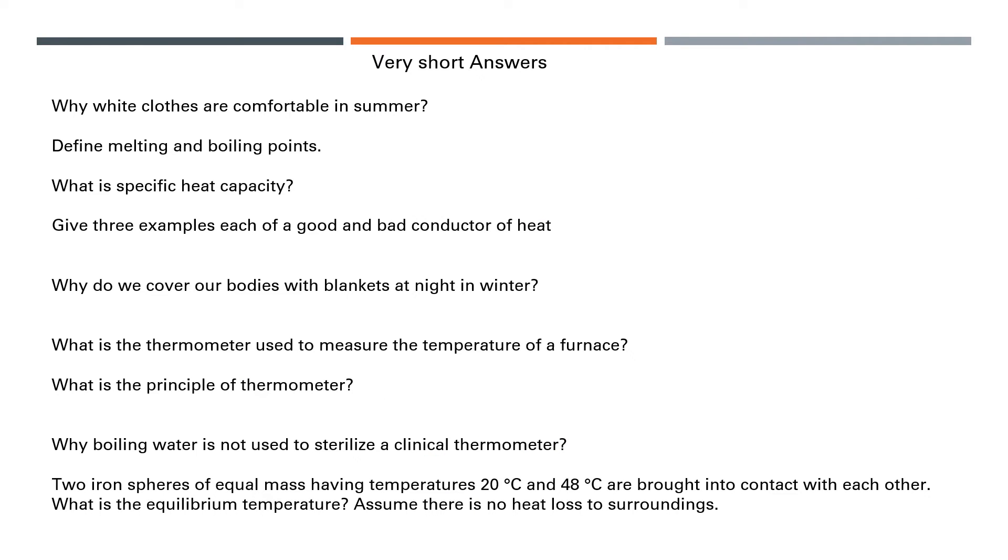Very short answers. Why are white clothes comfortable in summer? Because white colors are good reflectors of heat. This is why they absorb less heat. Define melting points and boiling points. Melting point means the constant temperature at which a solid substance changes to its liquid. Boiling point is the constant temperature at which a liquid substance starts to boil. What is specific heat capacity?